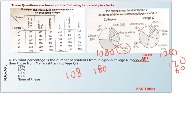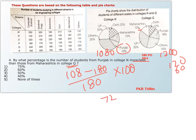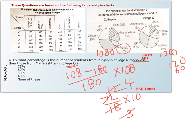We calculate the percentage more or less with college Q as the base. The difference is 180 minus 108 equals 72. So 72 divided by 180 into 100 equals 72/18 times 10, which equals 40%. Therefore, college N is 40% less than college Q, which is option 4.